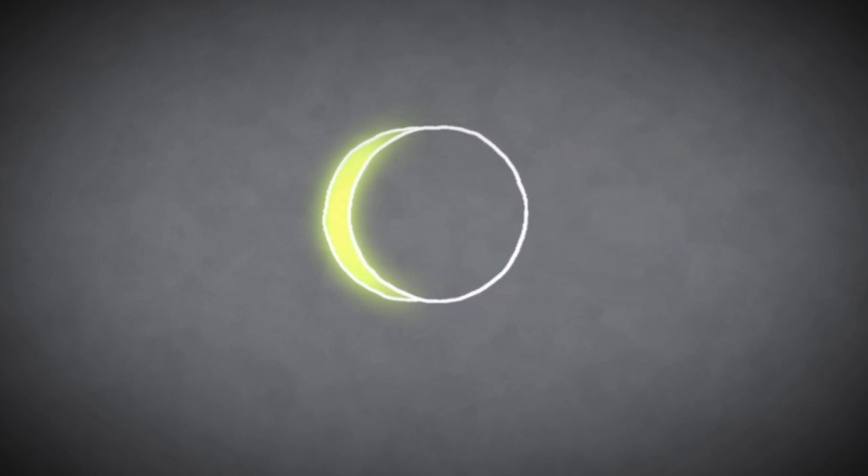Observers in the path of the shadow will see the silhouette of the new moon blocking all or part of the sun's disk from view.